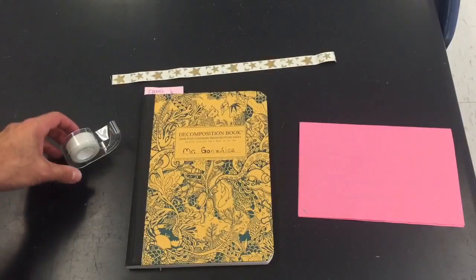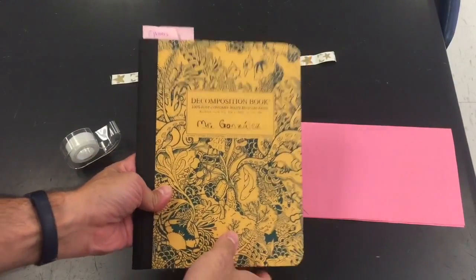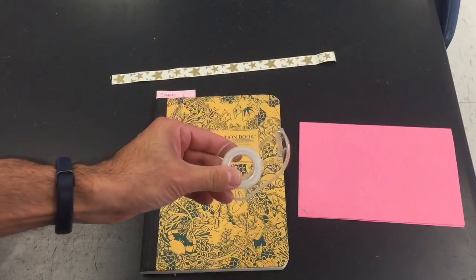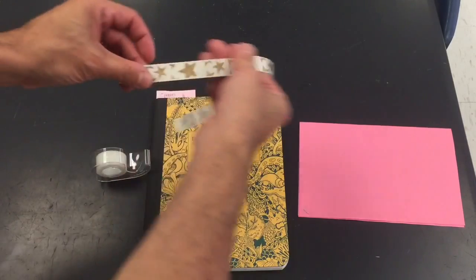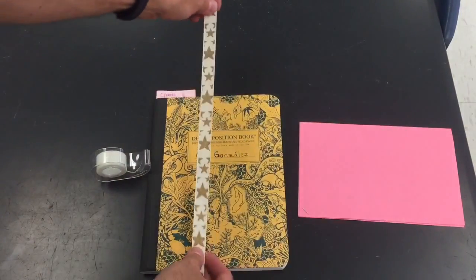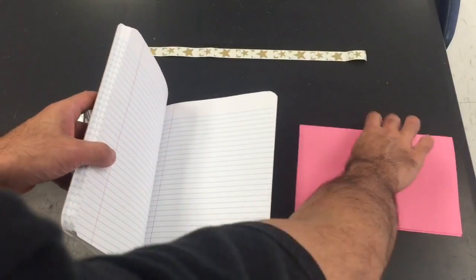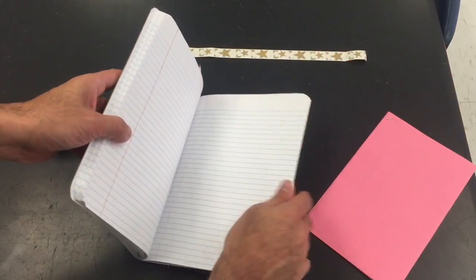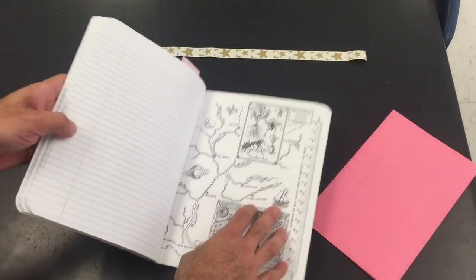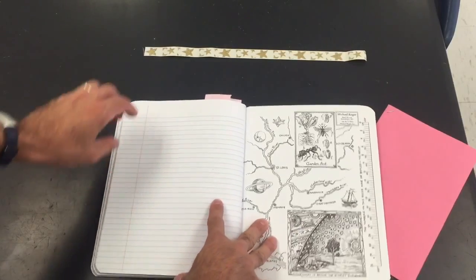For this next setup you're gonna need your notebook again, some tape, and a piece of ribbon that's gonna be longer than your notebook. And I have here an assignment that I'm gonna show you how you can make a built-in folder in your notebook.